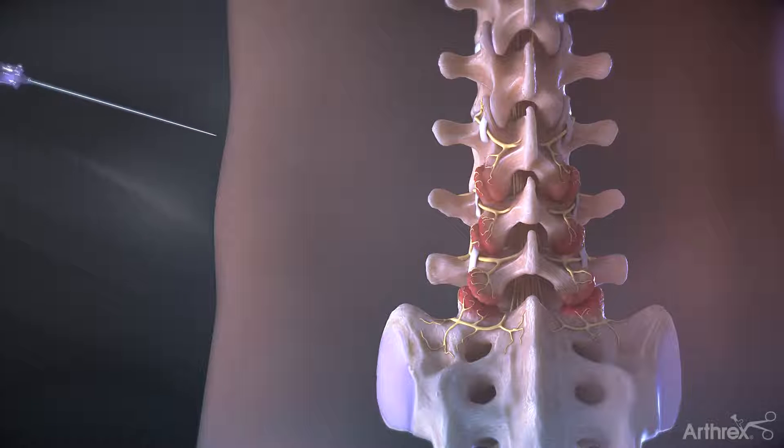Insert the spinal needle, docking at the junction of the transverse process and facet. Remove the stylet and pass a guide wire through the spinal needle. Remove the spinal needle.